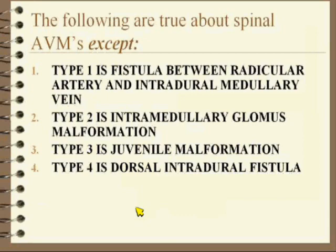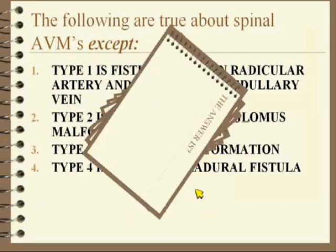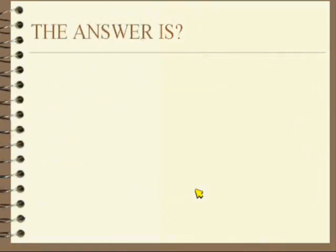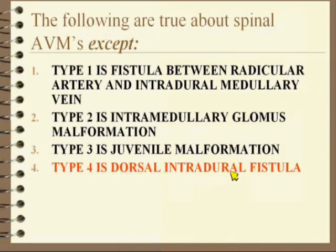Very good. The answer — the incorrect one — is type 4, the dorsal intradural fistula. Now, if you know that, that is incredible minutia. You are to be congratulated on that. I mean, I can barely keep the 1 through 4 straight, let alone.